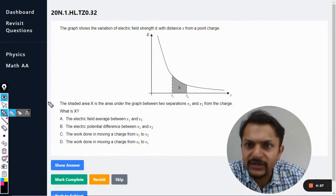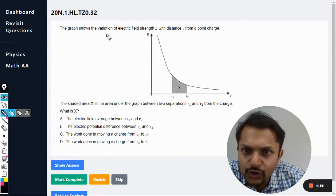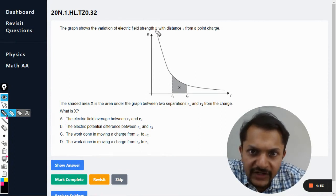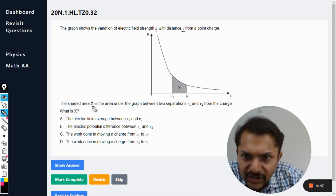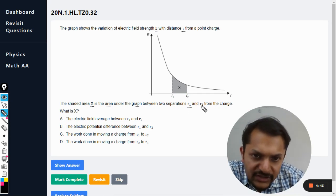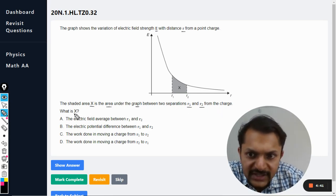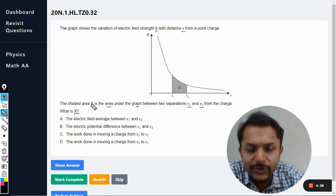Okay, dear students, let's see what is there in this question. The graph shows the variation of electric field strength E with distance r from a point charge. The shaded area X is the area under the graph between two separations r1 and r2. From the chart, what is X?